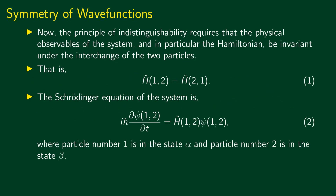In the last class, we talked about the principle of indistinguishability of identical particles. If two particles are truly identical and truly indistinguishable, then the physical observables of the system have to be invariant under the interchange of two particles. So if interchanging two particles changes the physical observables, that would mean the particles are distinguishable somehow. The principle of indistinguishability requires that the Hamiltonian be invariant under the interchange of two particles. That is, we must have H(1,2) = H(2,1).